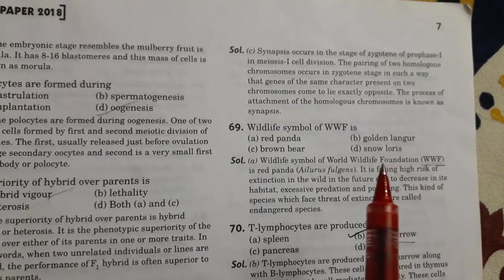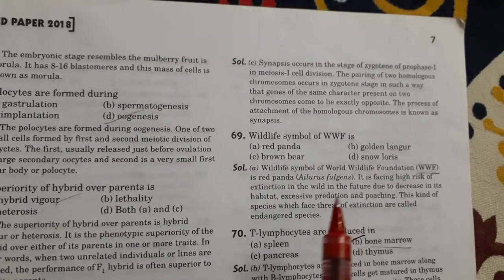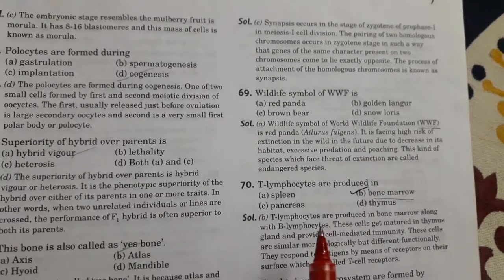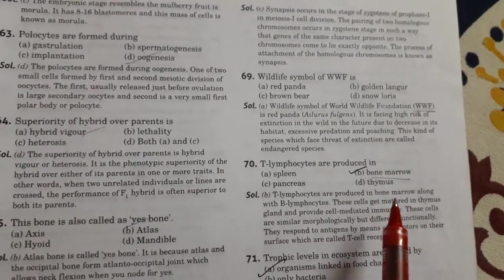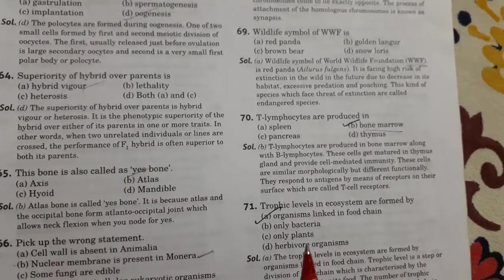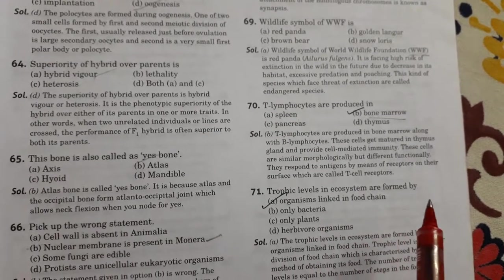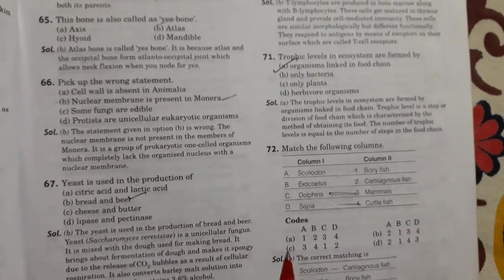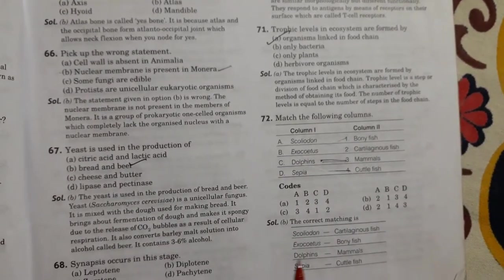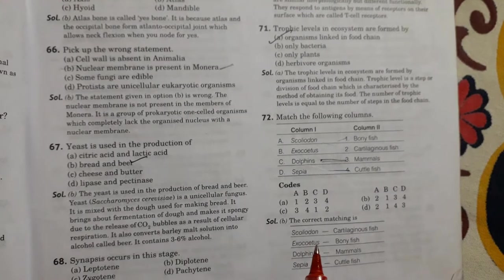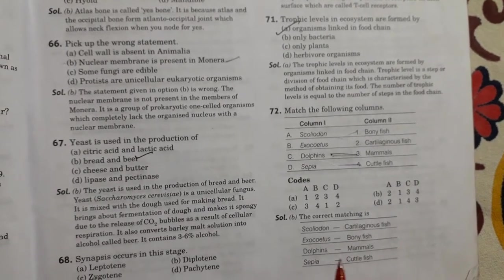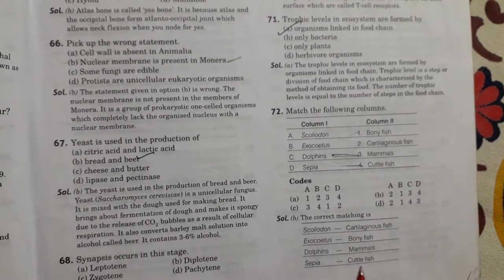Next is wildlife symbol of WWF is red panda. Then T lymphocytes are produced in bone marrow. Then trophic levels in ecosystem are formed by organisms linked in food chain. Next is match the following. So this is right answer: Scoliodon is cartilaginous fish, Exocoetus is bony fish, dolphins is mammals, and sepia is cuttlefish.